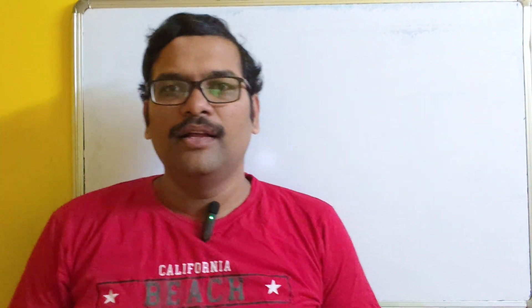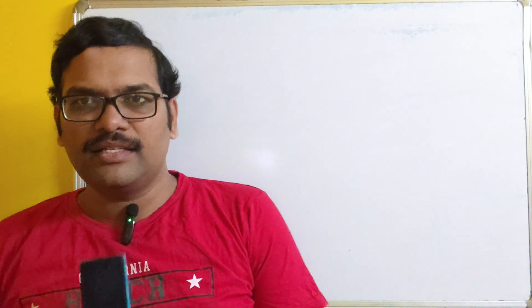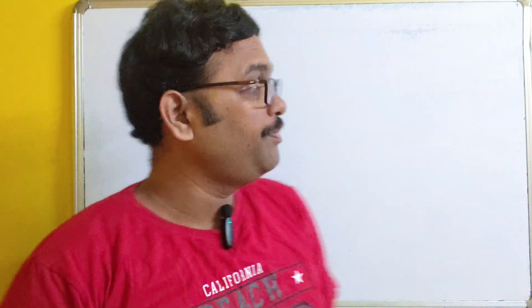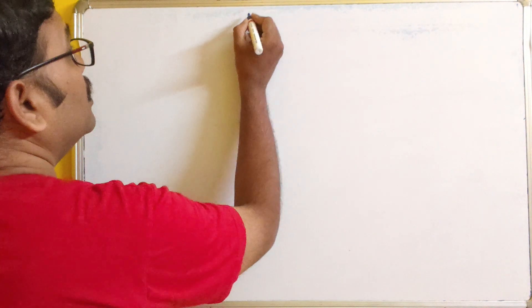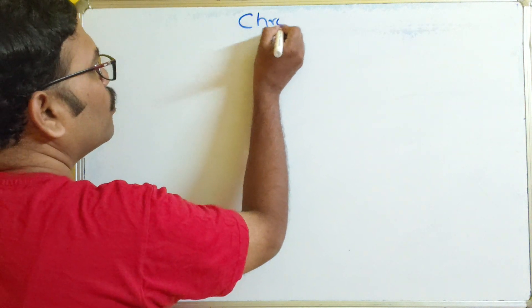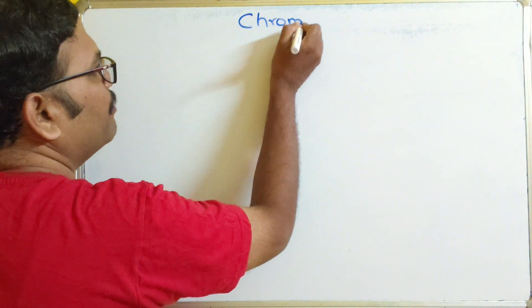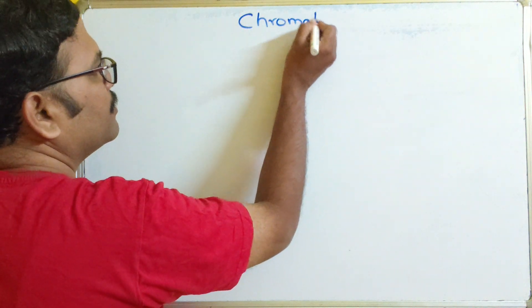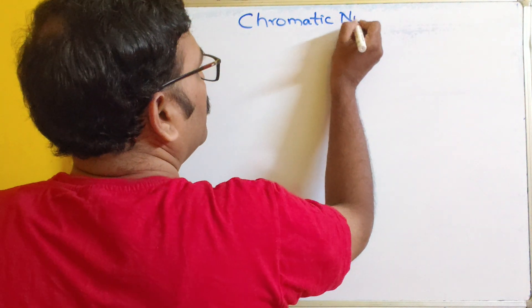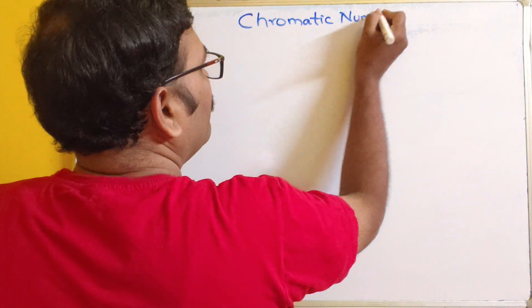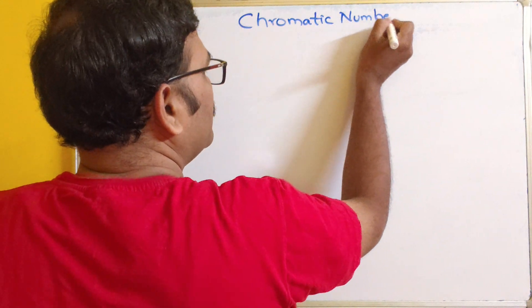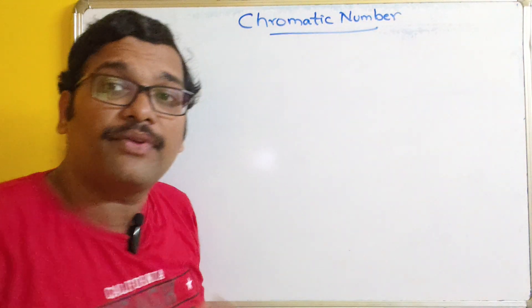Hello friends, welcome back to our channel. Today we will discuss one more concept in discrete mathematics: the chromatic number in graph coloring.